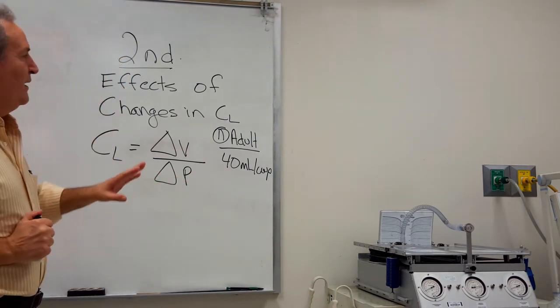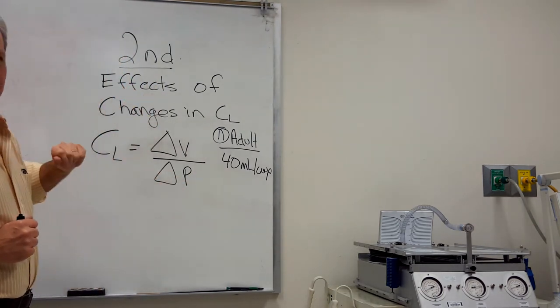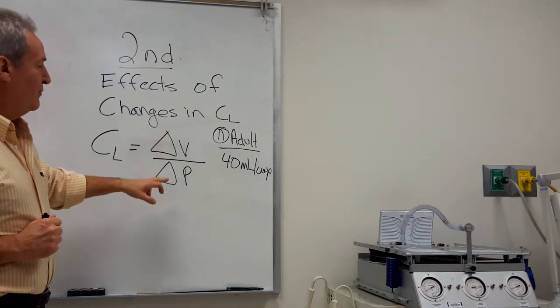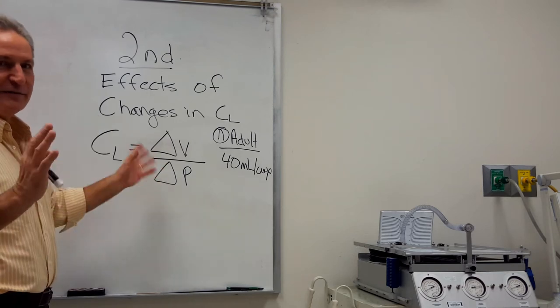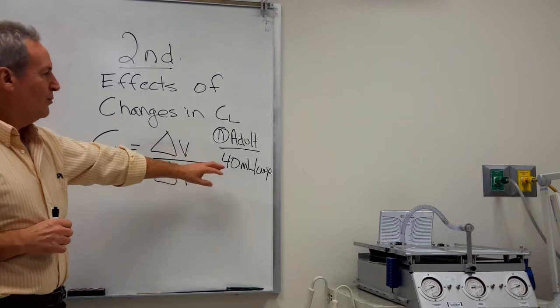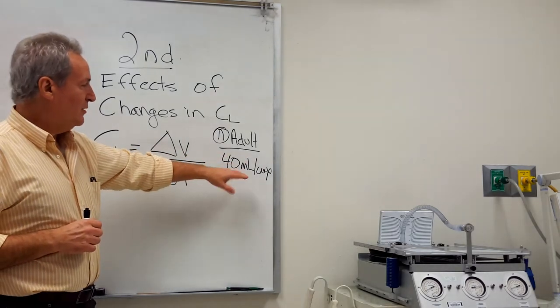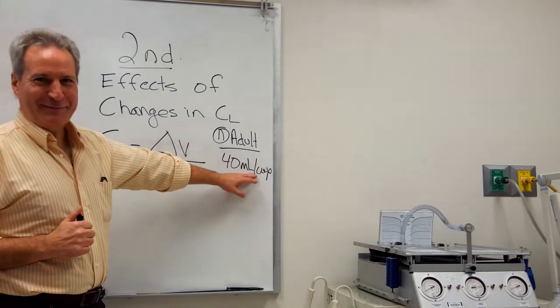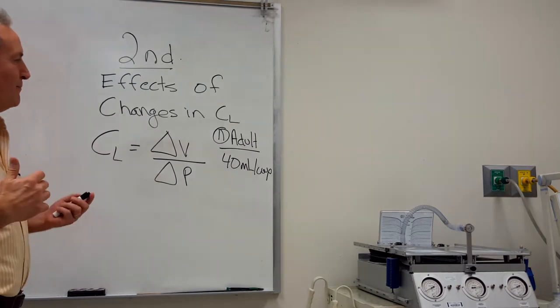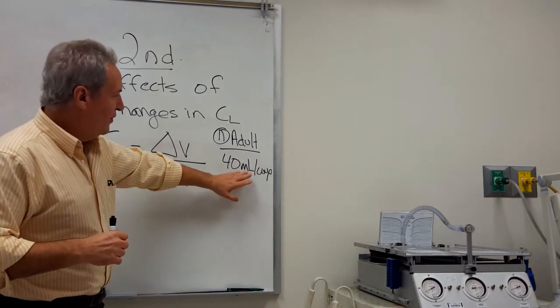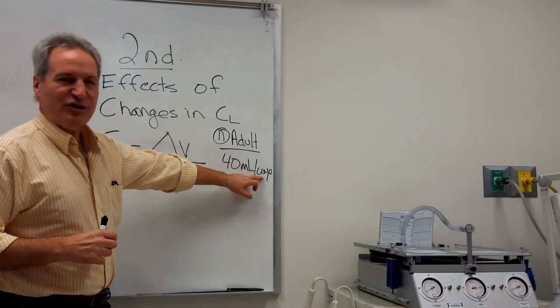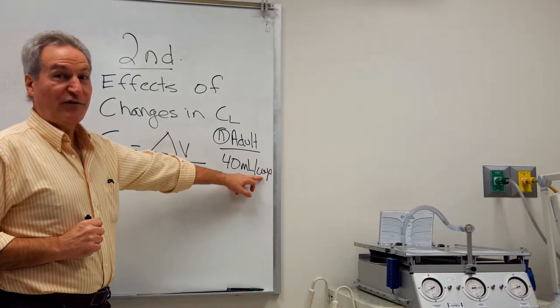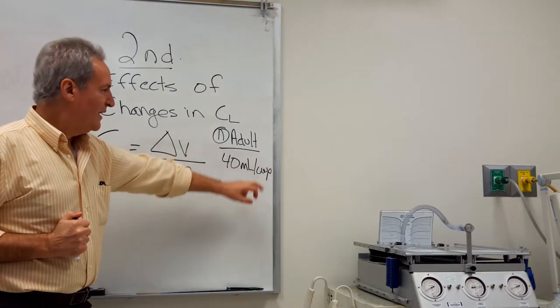Let's review what compliance is and what those effects are. Compliance is equal to change in volume over change in pressure: C_L = ΔV/ΔP. A low normal for an adult is around 40 mL per centimeter of water pressure, so we're getting 40 mL for each one centimeter of water pressure that the patient experiences or that's given from the ventilator.